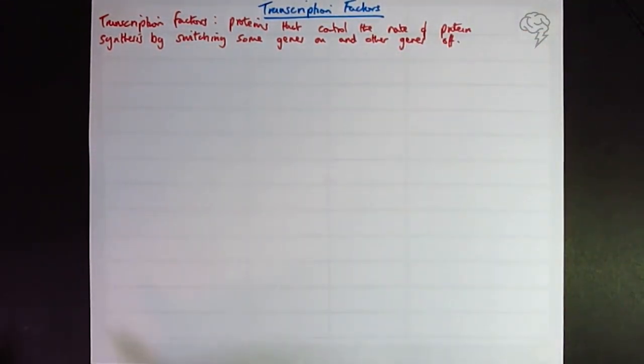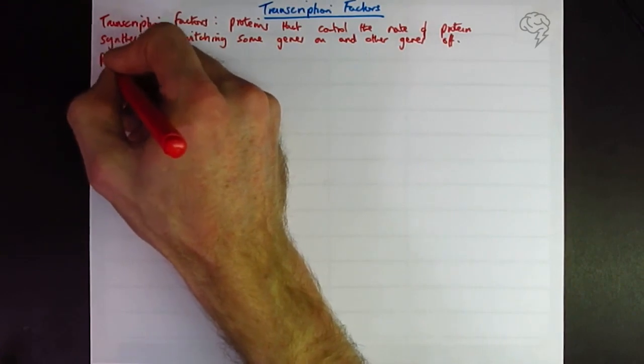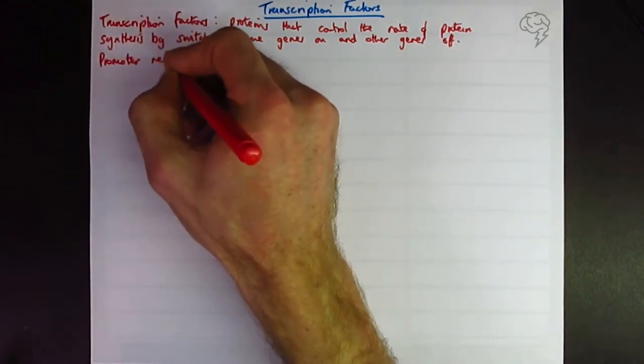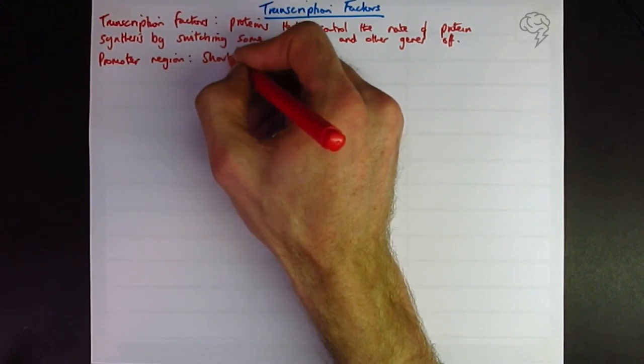Another word we're going to use during this tutorial is going to be the promoter region, which is a short sequence of DNA at the start of a gene, which is basically the bit that RNA or DNA polymerase is going to attach to.